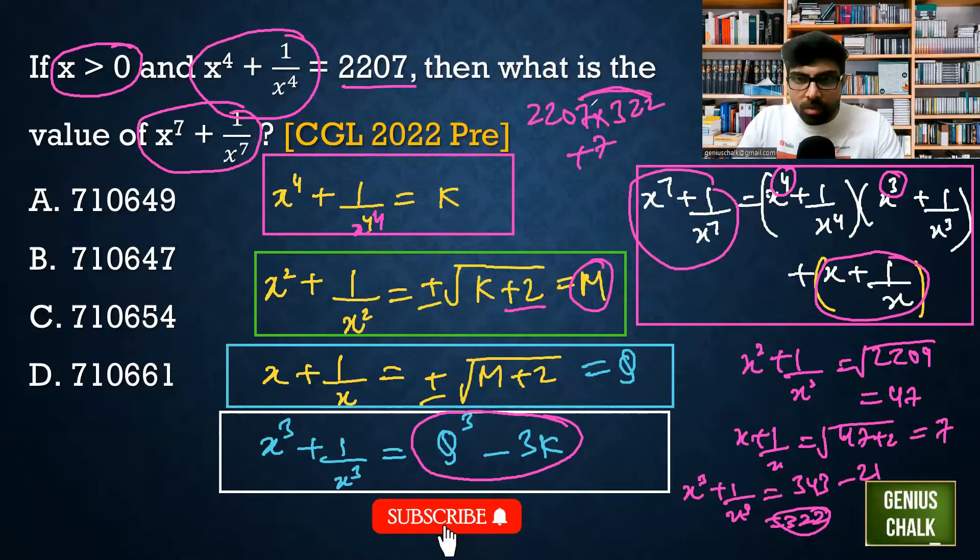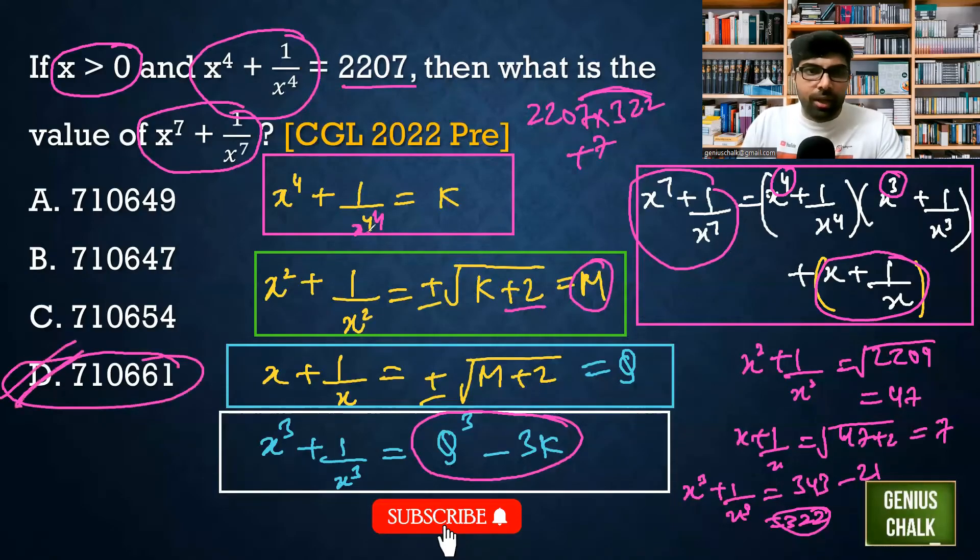That means if you multiply this will be... just by the last digit we can solve it. It is option B which is the right answer, 710647. Thank you.